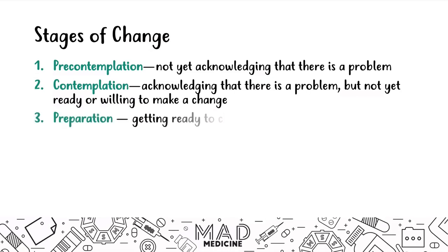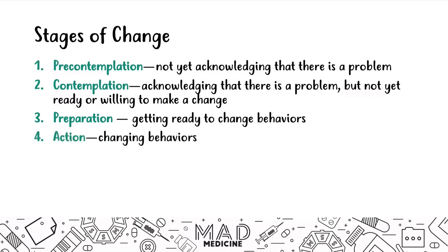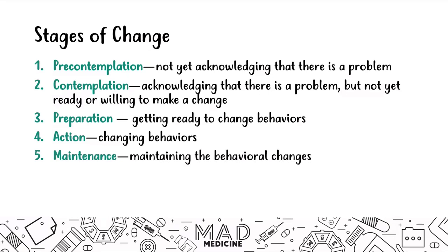Then you start preparing. Preparation is the third stage — you know you have an addiction and you're ready to change, so you're starting to prepare. Then comes the action stage, where you take actions to change your behavior. Once you have addressed your substance abuse problem, you move into the maintenance stage, where you try to maintain and sustain those changes over time to stay substance-free.